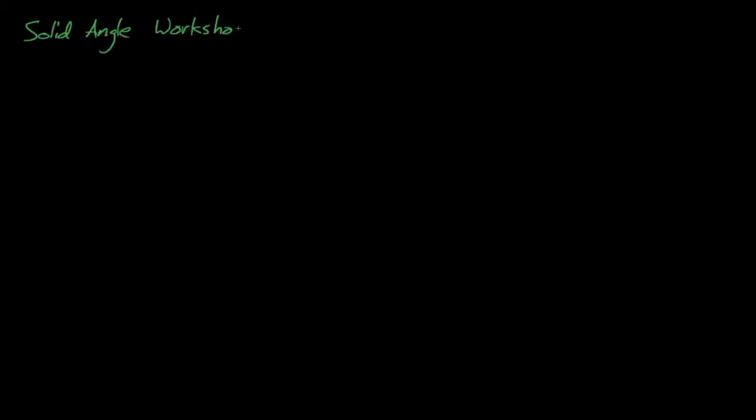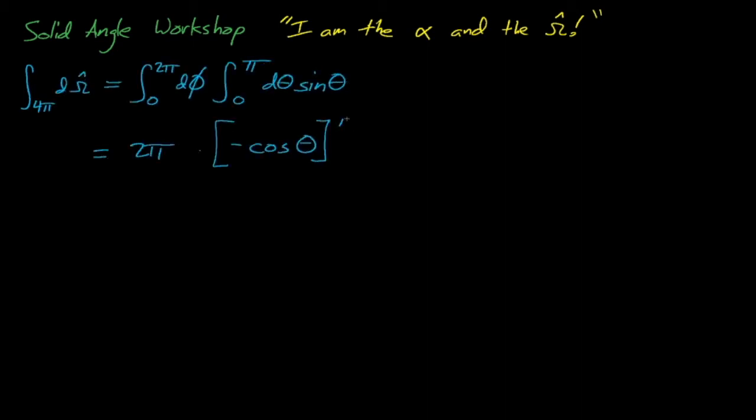Before we move on, we will eventually be taking the moments of this angular flux expression with respect to omega, and before we do that, it's worth taking a few minutes to explain the math behind how to integrate over this omega variable. Taking the zeroth moment of some constant times omega is fairly simple. It requires no vector mathematics and simply integrates d omega over 4 pi, which means that phi ranges from 0 to 2 pi, and theta ranges from 0 to pi. As we mentioned earlier, the integral of d omega over all 4 pi is just 4 pi.